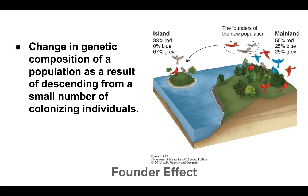Finally, the founder effect: if a few individuals from a mainland population colonize an island, the genotypes on the island only represent the genotypes that came from the mainland. Looking at this example, on the mainland the majority of birds were red. But the founders — the first ones that arrived on the island — were gray and red. So some genotypes from the mainland are not present in this new population, and we can see that no blue birds remain; now the island population is mostly gray with a few red.